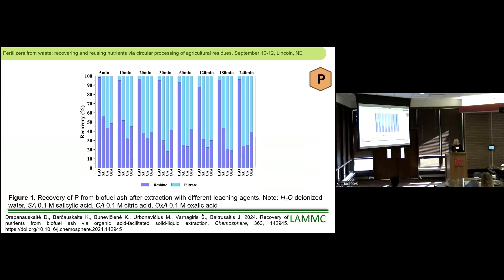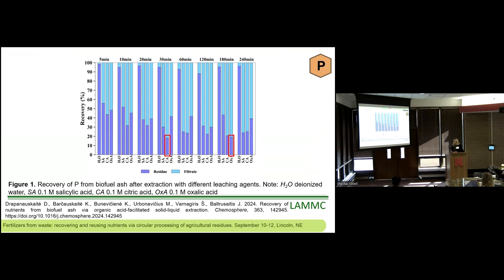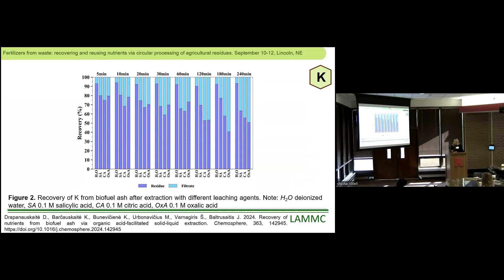Talking about the results: the highest concentration of phosphorus was extracted after 30 minutes using citric acid. Also, around 81% of phosphorus was extracted to the filtrate when we used oxalic acid, but the extraction time was six times longer. Moving on to potassium recovery — around 8%, the highest recovery using deionized water, showing that very small amounts of potassium in the ash are in water-soluble salts.